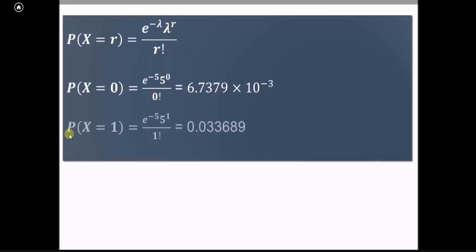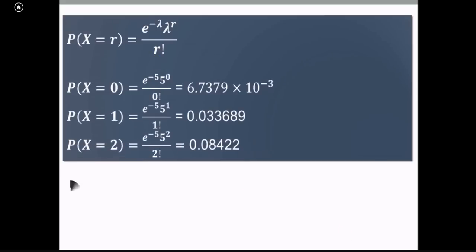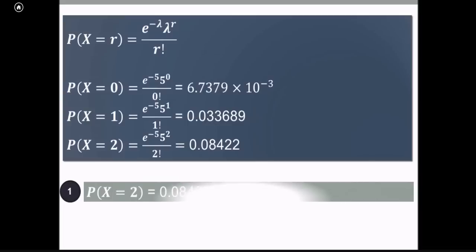Suppose we want to find out probability of x equal to 1, then put r equal to 1, lambda is 5, again lambda is 5, and r is 1 divided by 1 factorial. Now we have to find out the probability of x equal to 2, that is the probability mass function, and that value we have already calculated as 0.08422.